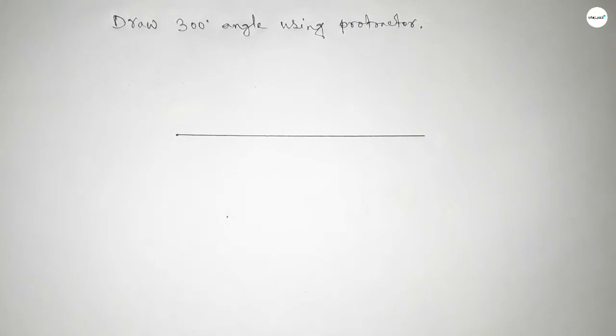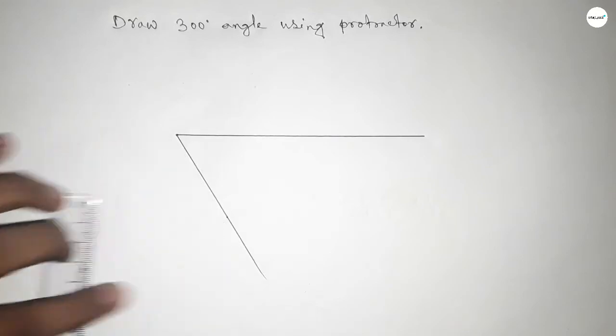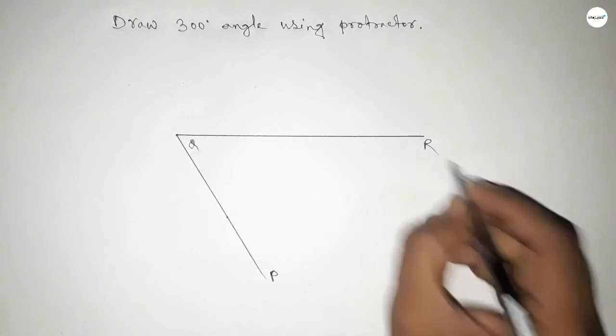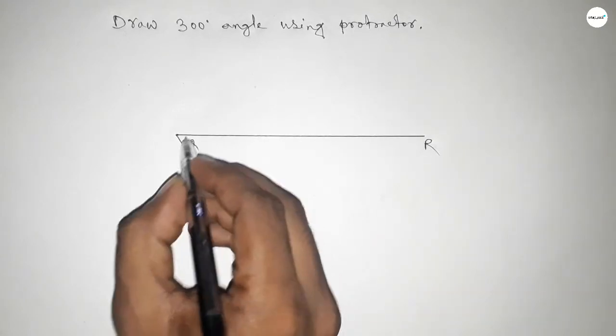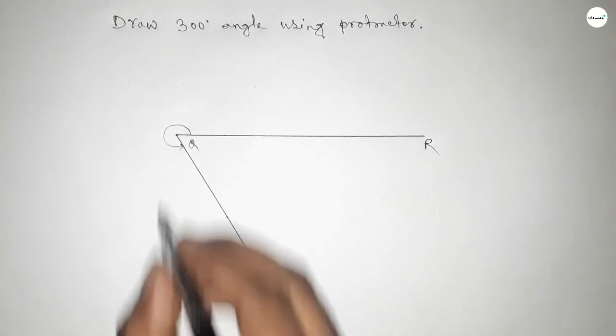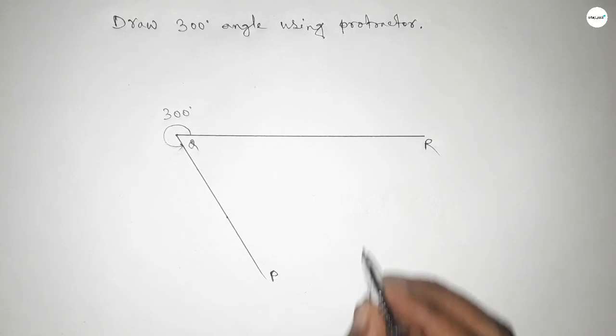degree angle, we can get 300-degree angle. So by joining this to get 300-degree angle. So this is P, Q, and R. So angle PQR equal to this, and this is 300-degree angle.